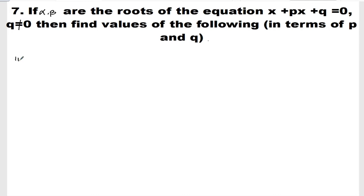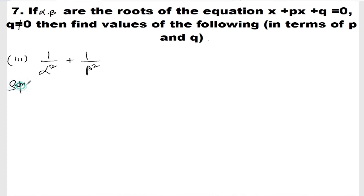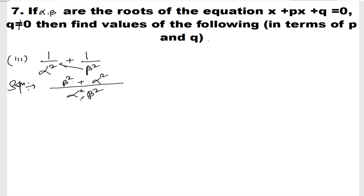Roman number 3: 1/α² + 1/β². Taking LCM as α²β², we get (β² + α²) / α²β². Now we need to express α² + β² in terms of α + β and αβ.